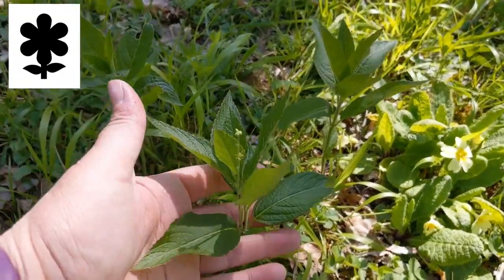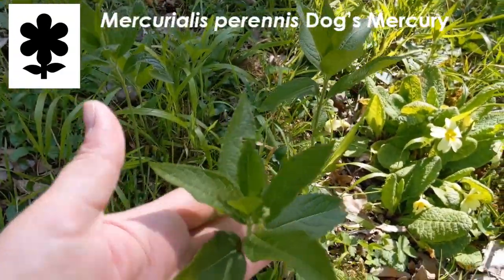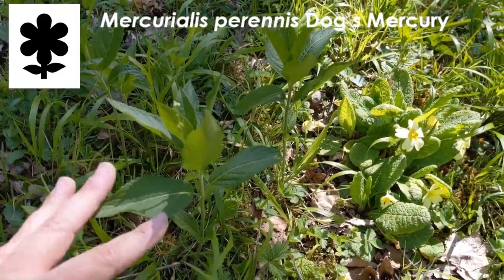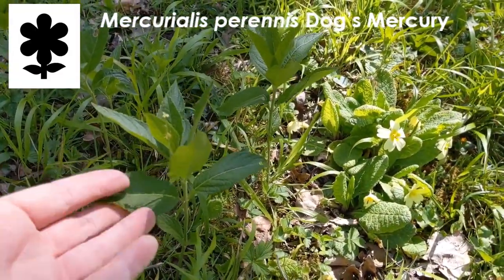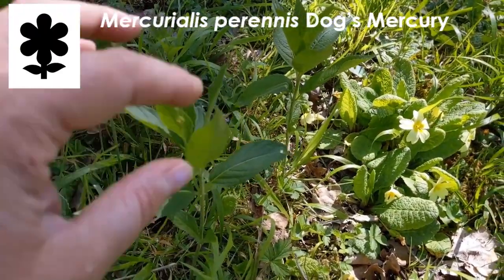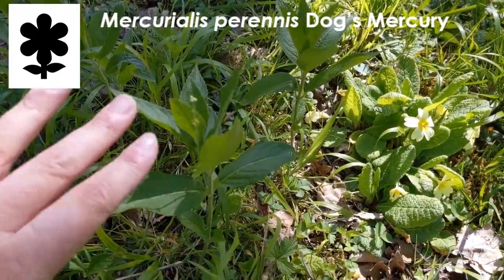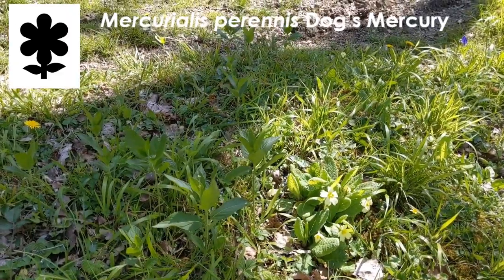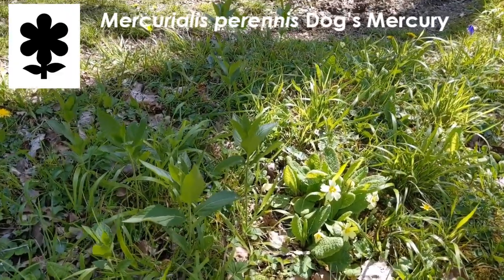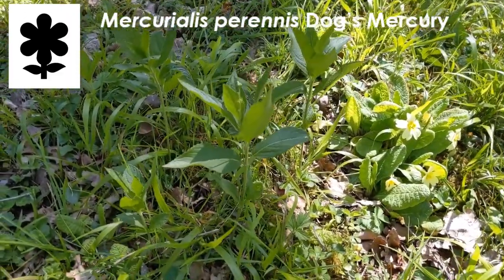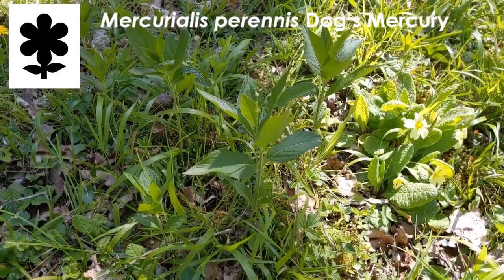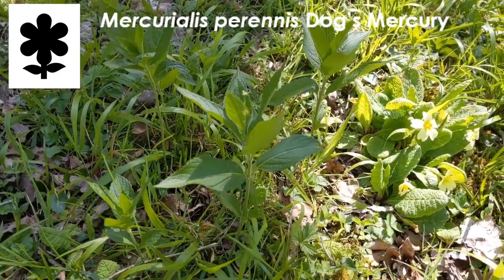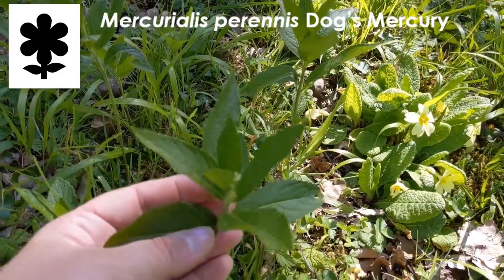Here's another one — Dog's Mercury. It's a fairly innocuous plant; basically all green, with green leaves and tiny, tiny flowers. If I zoom out, you can see it's actually quite difficult to spot. But you can get it in really dense coverings on the woodland floor, and some woodland types are actually dominated by this in the ground flora.